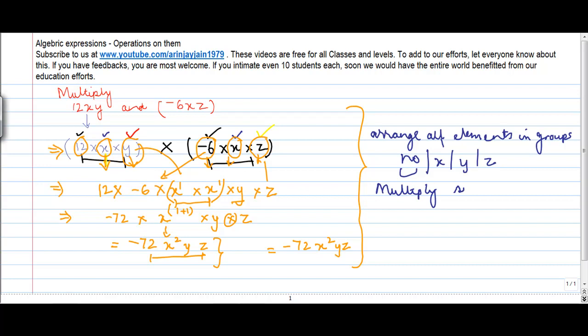Multiply similar items. So you multiplied 12 by 6. You multiplied x by x. y and z, nothing was there, so I just kept them as it is. And then you reach the solution. Fairly simple.